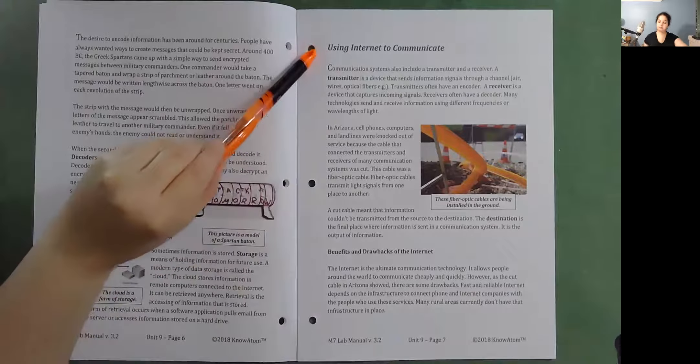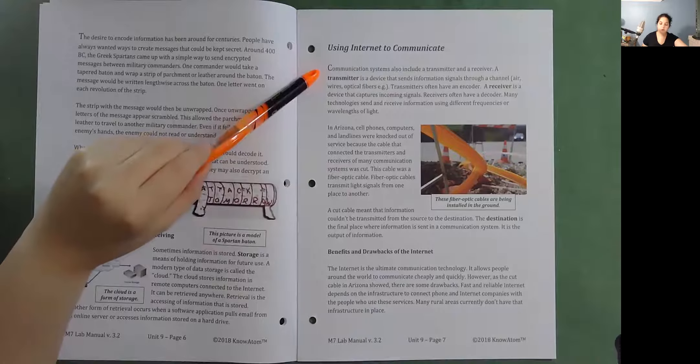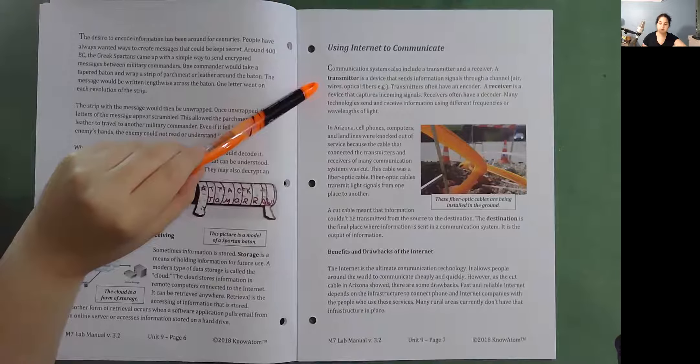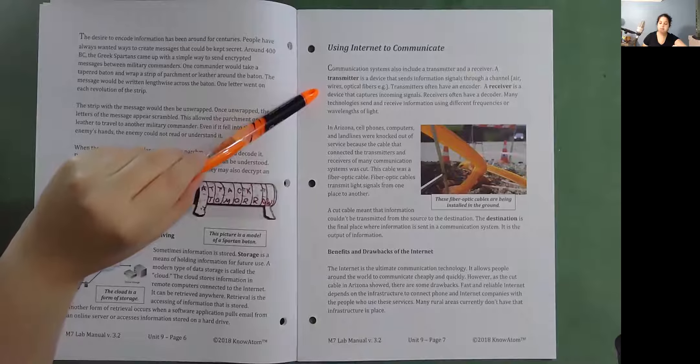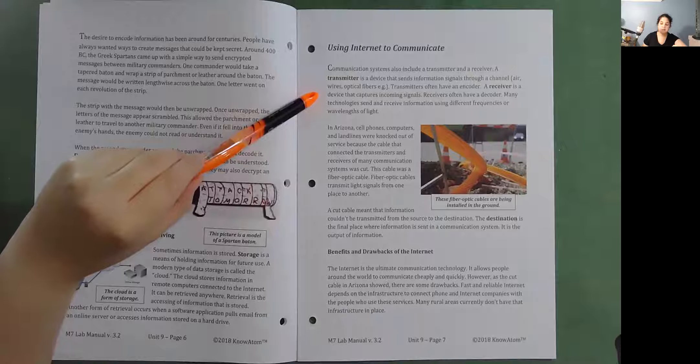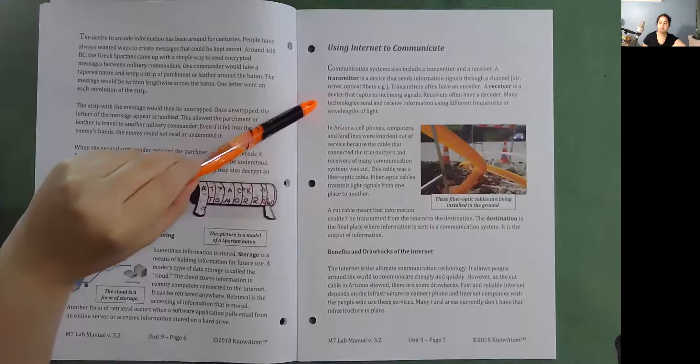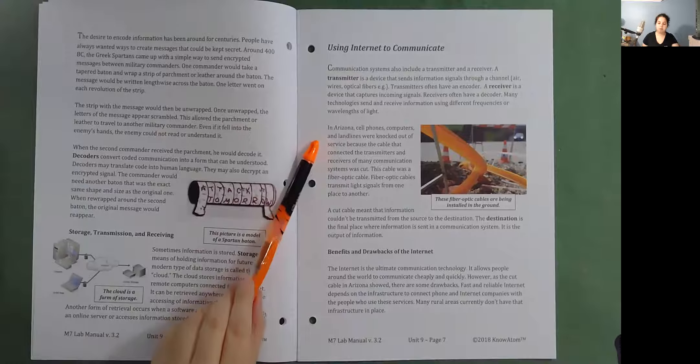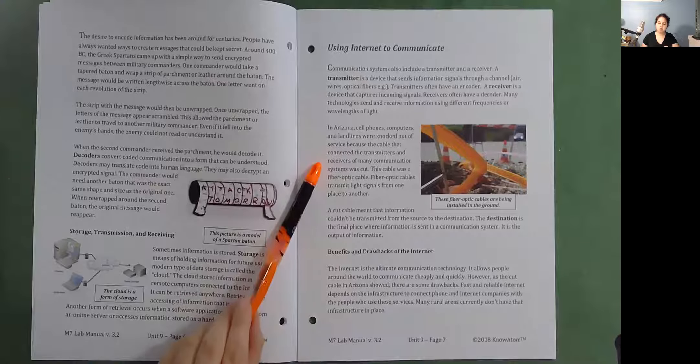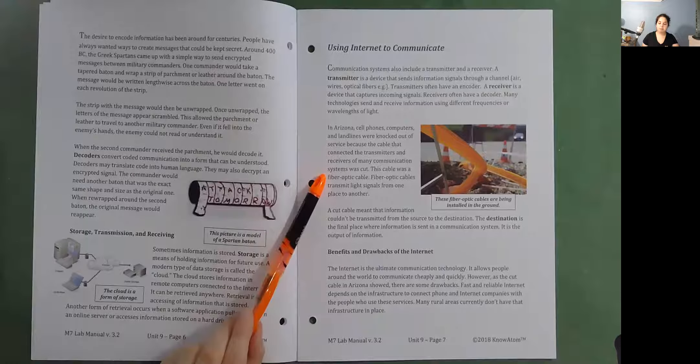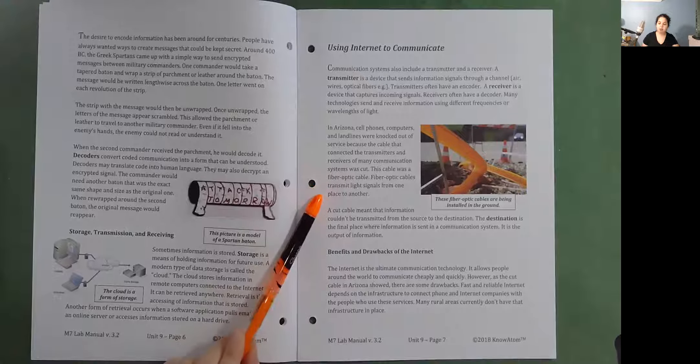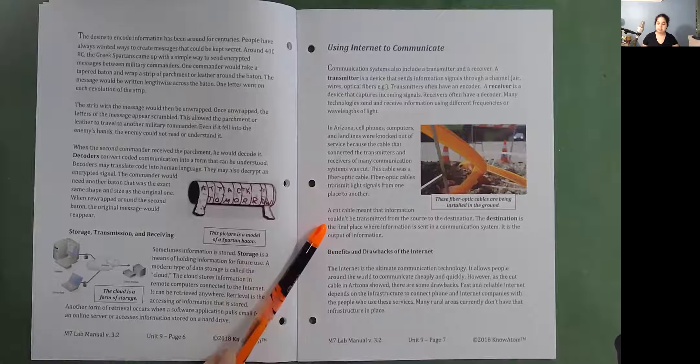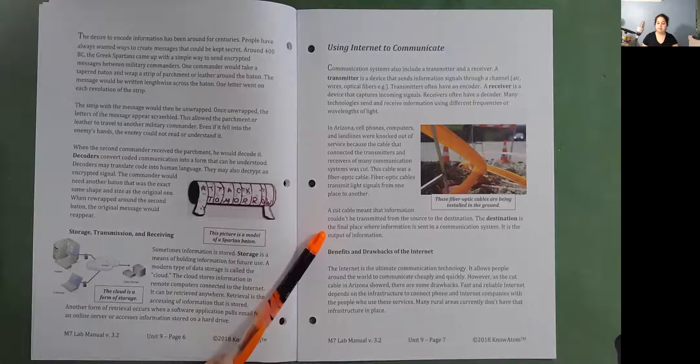Using internet to communicate. Communication systems also include a transmitter and a receiver. A transmitter is a device that sends information signals through a channel. Air wires, optical fibers, etc. Transmitters often have an encoder. A receiver is a device that captures incoming signals. Receivers often have a decoder. Many technologies send and receive information using different frequencies or wavelengths of light. In Arizona, cell phones, computers, and landlines were locked out of the service because the cable that connected the transmitters and receivers of many communication systems was cut. This cable was a fiber optic cable. Fiber optic cables transmit light signals from one place to another. A cut cable meant that information couldn't be transmitted from the source to the destination. The destination is the final place where information is sent in a communication system. It is the output of information.